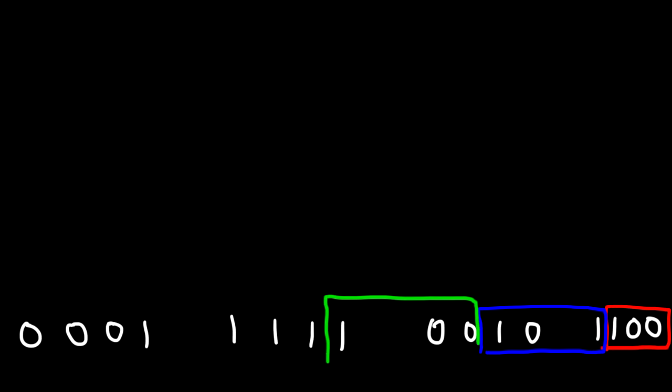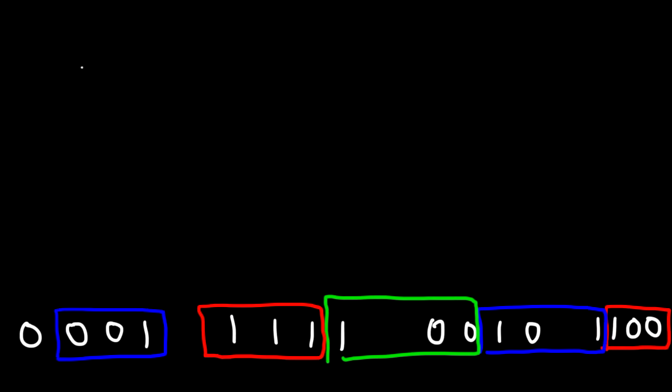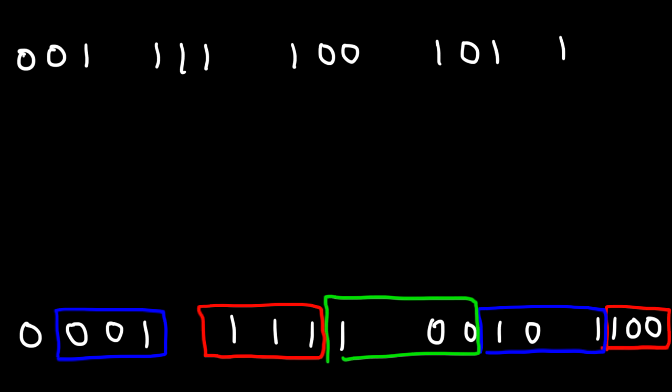Now let's break it up into groups of three. This is the first group of three, the second group of three, the third group, the fourth group, and the fifth group. So the first group on the left is 0, 0, 1; then 1, 1, 1; then 1, 0, 0; then 1, 0, 1; and then 1, 0, 0.